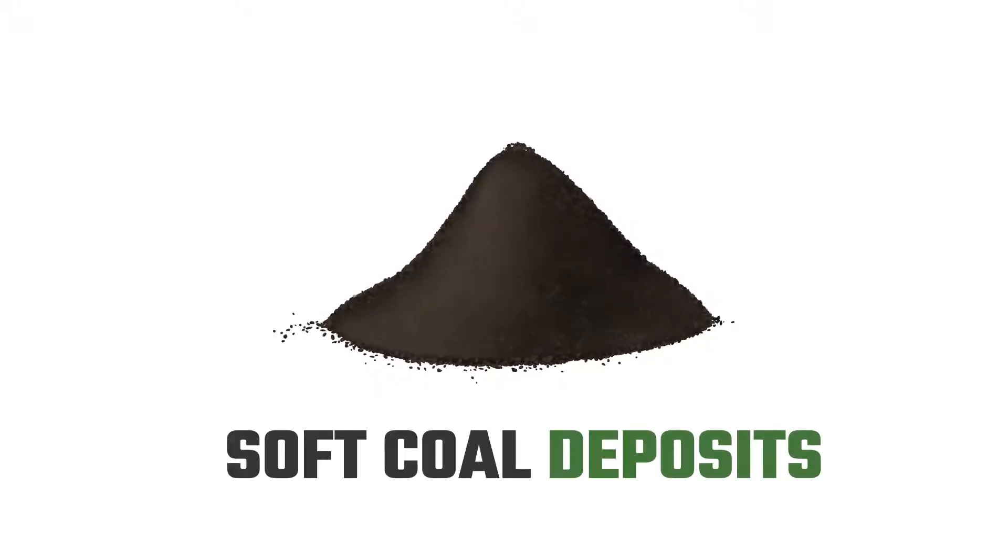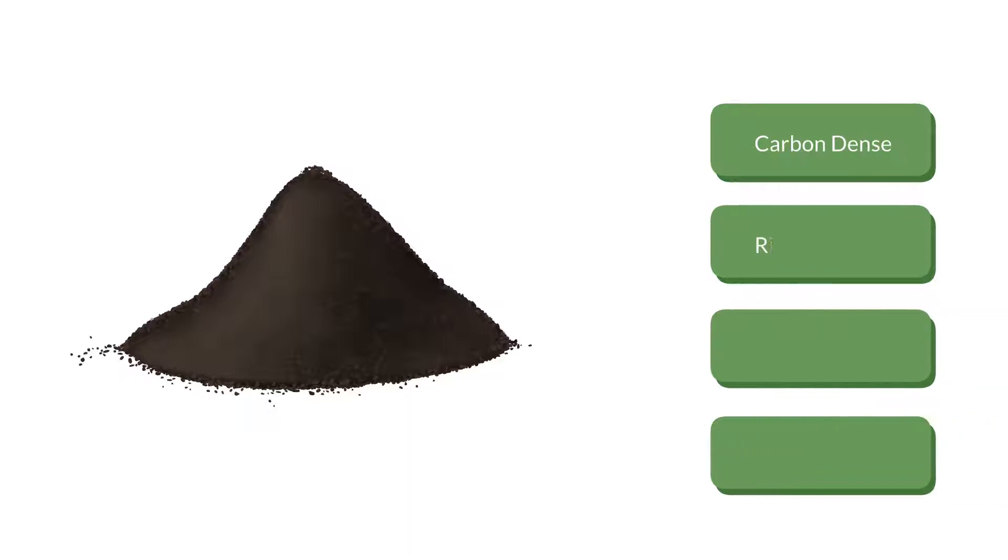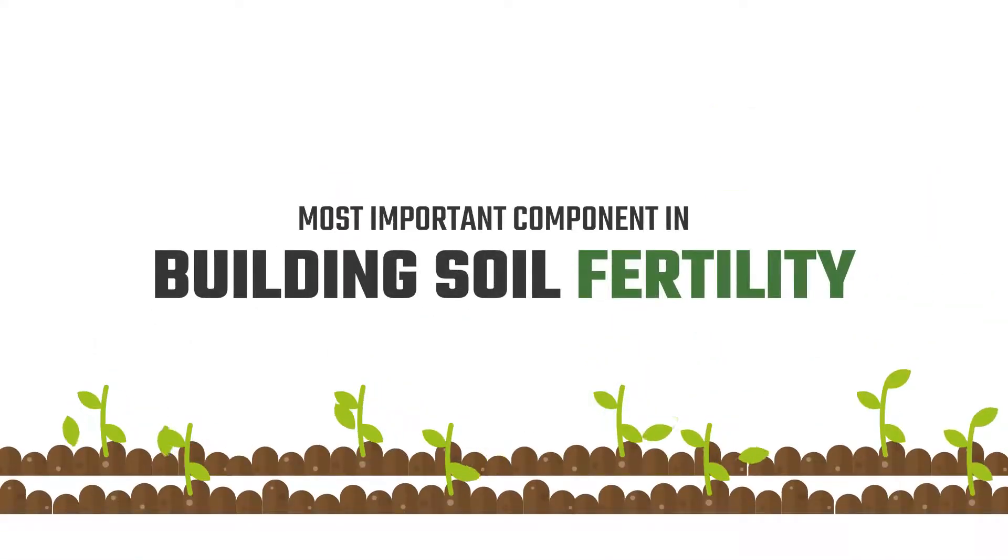Humates are soft coal deposits that are carbon dense, rich in humus, humic and fulvic acid and are regarded by agronomists as one of the most important components in building soil fertility.